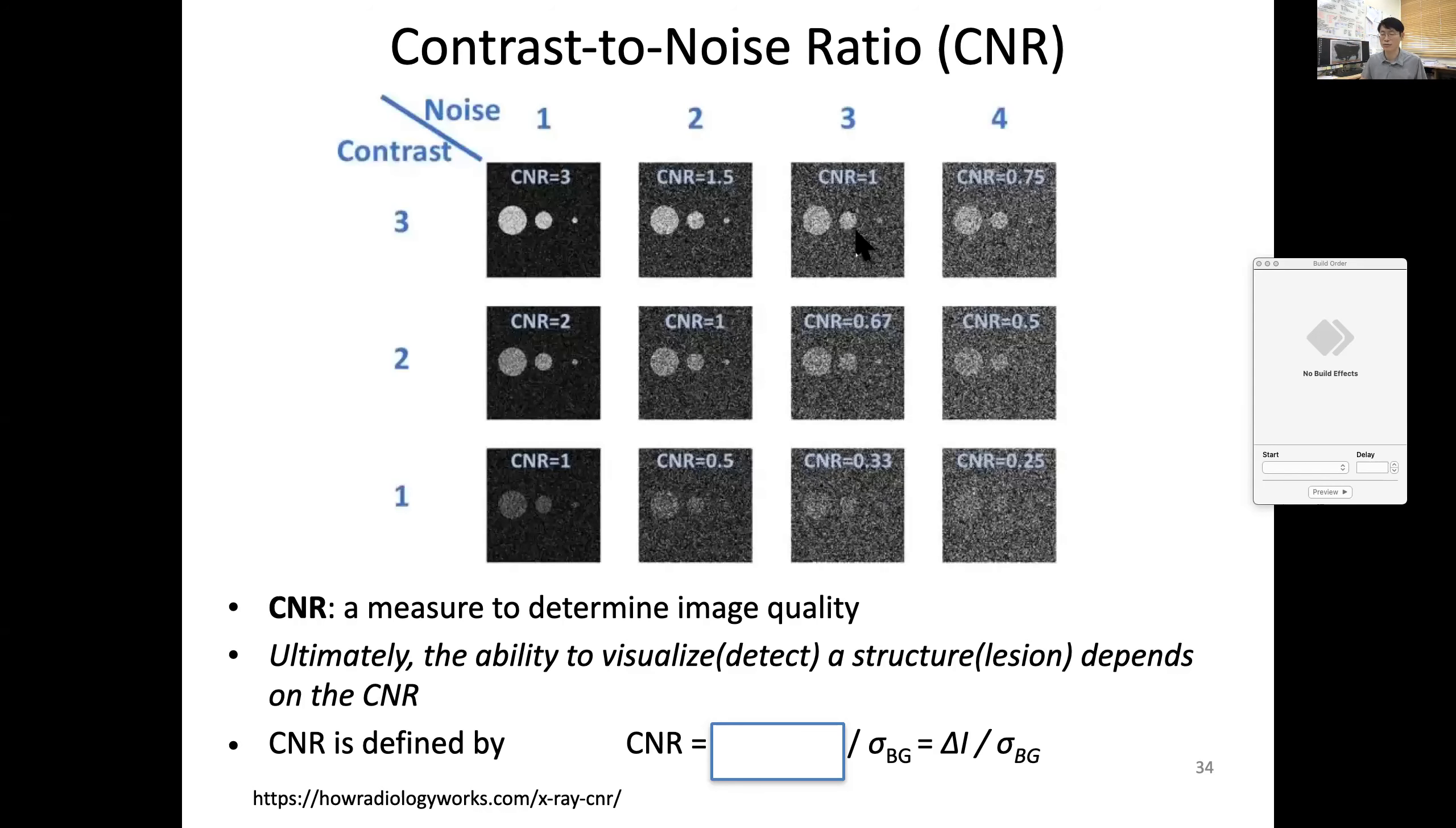Here I brought a simulation from this website. This is noise level one, two, three, four, and remember contrast is defined by signal level difference to the background. The contrast can be one, two, three. If contrast-to-noise ratio is below one, you start having difficulties figuring it out.